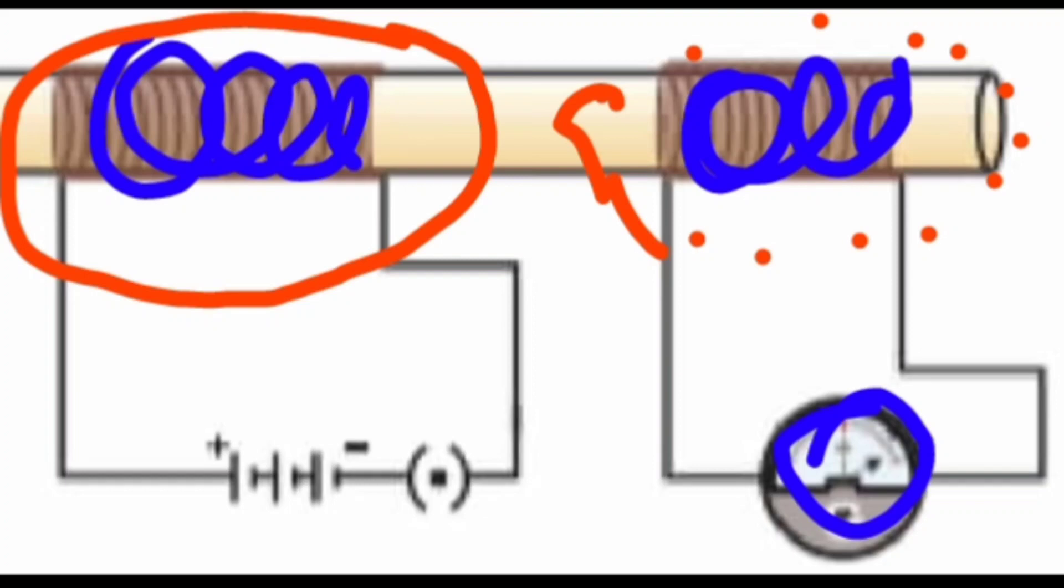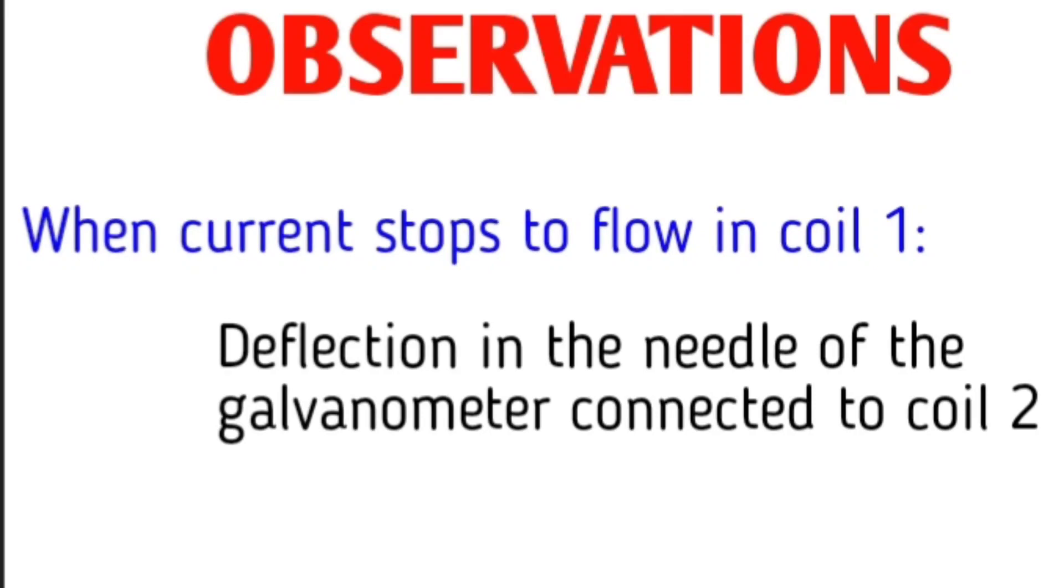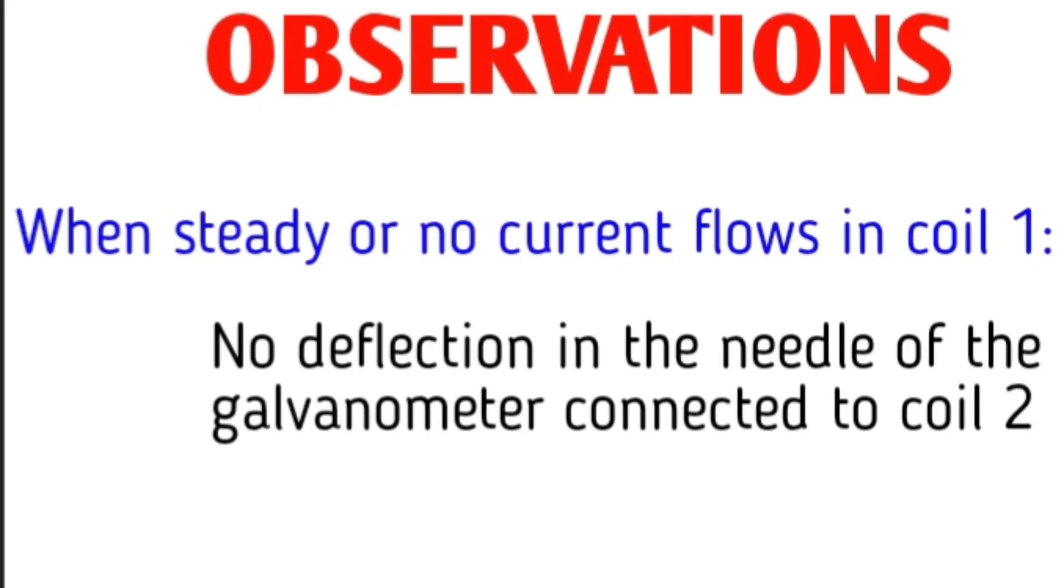When steady current flows, no deflection is seen in coil 2. When current stops flowing in coil 1, again a deflection was noted in coil 2. So the observation was: when current starts to flow in coil 1, deflection in the needle of the galvanometer connected to coil 2 is noted. When current stops flowing in coil 1, deflection is noted. But with steady current or no current, no deflection is seen. What he concluded was that starting or stopping causes the magnetic field to change, and that is inducing a current in the nearby coil.